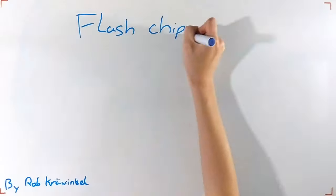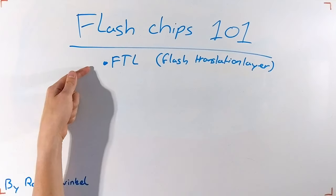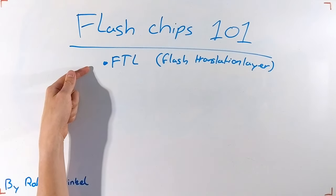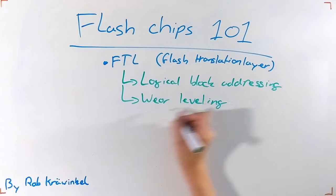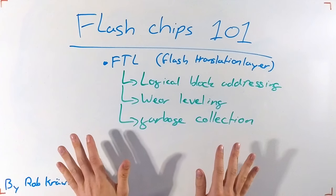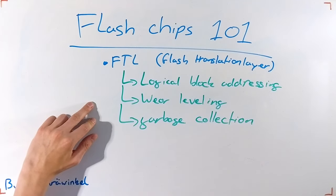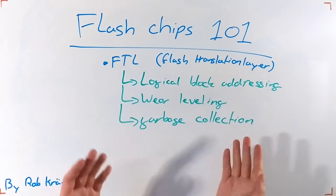In order to guarantee the lifetime of a flash chip, they require what is known as an FTL, or flash translation layer, which handles tasks such as logical block addressing, wear leveling, and garbage collection. Don't worry about what each of these terms mean for now, especially the latter two here are important, as they can cause delays in writing through a flash chip.